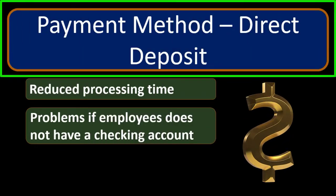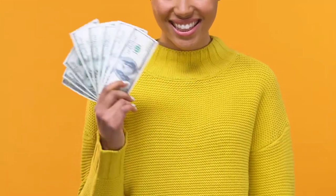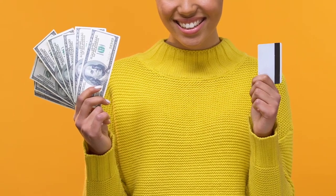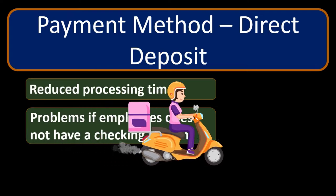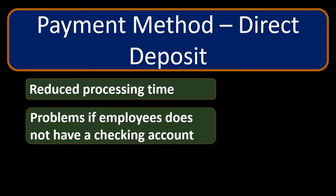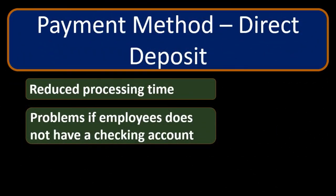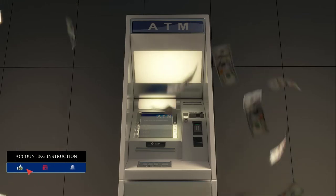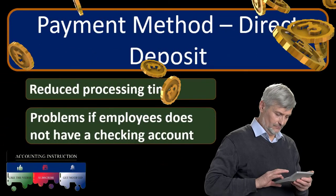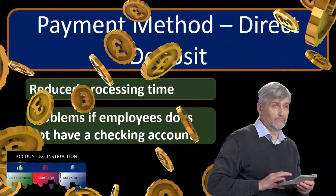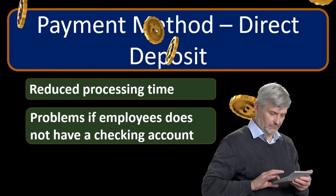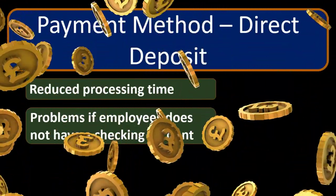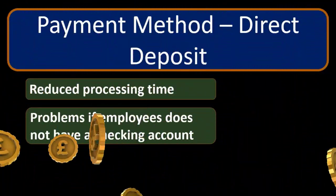It's a really good idea to set up a separate checking account so that the bank is doing close tracking of just the payments made for payroll. The other modern method would be direct deposit, which has a lot of advantages — it reduces processing time and we don't have to manually deliver payroll checks. It can cause some challenges with separation of duties since the process happens automatically, and there can also be an issue if an employee doesn't have a checking account or doesn't want direct deposit.